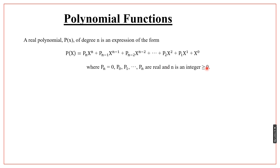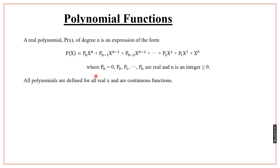The integer n must be greater than or equal to zero, meaning the domain is restricted. While integers include negative, zero, and positive numbers, for polynomial functions we only use integers that are zero or positive. All polynomials are defined for all real x and are continuous functions.